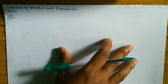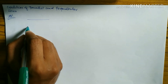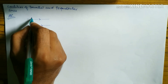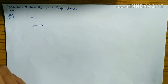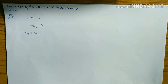What are the conditions of parallel and perpendicular lines? Suppose two lines are here. If two lines are parallel, the slope of the first line and the slope of the second line are always equal: m1 is equal to m2. When two lines are parallel then m1 equals m2, where m1 means the slope of the first line and m2 means the slope of the second line. This is the condition for parallel lines.